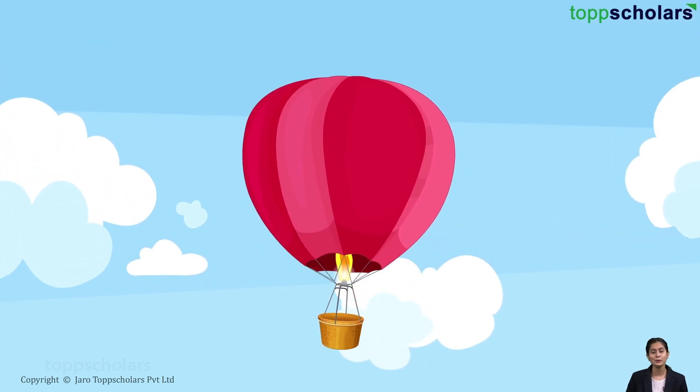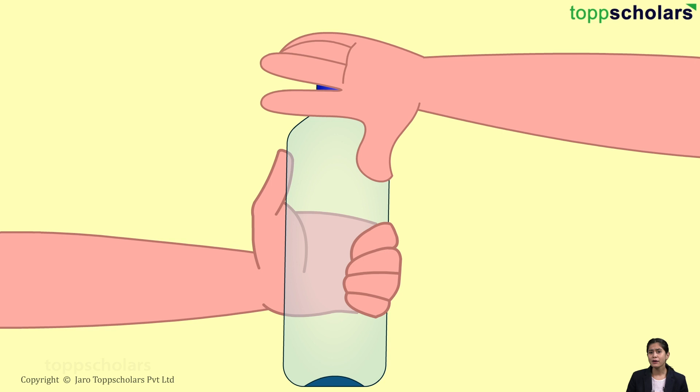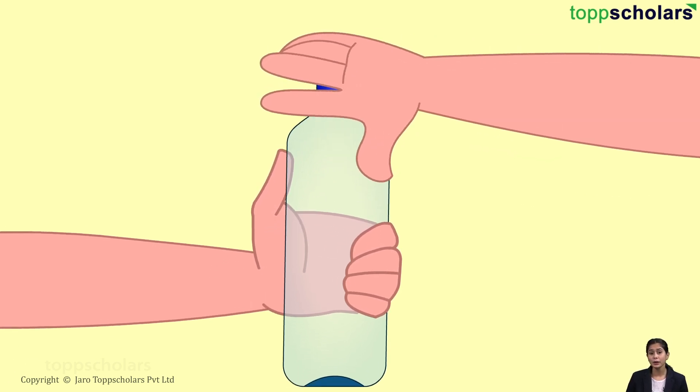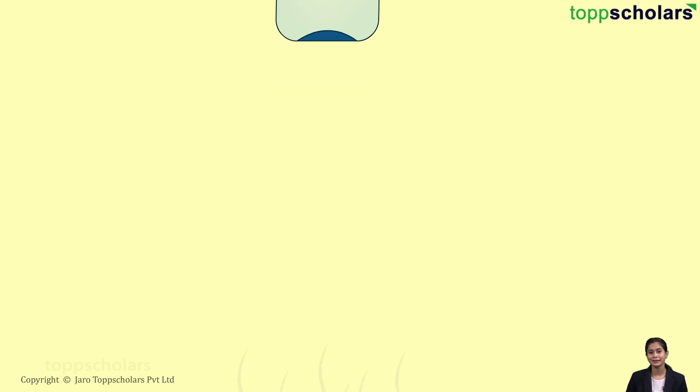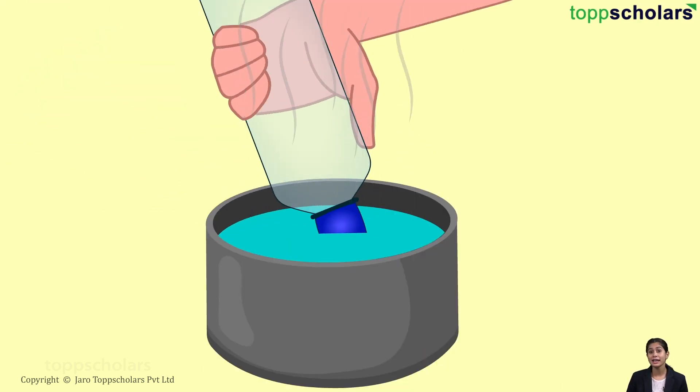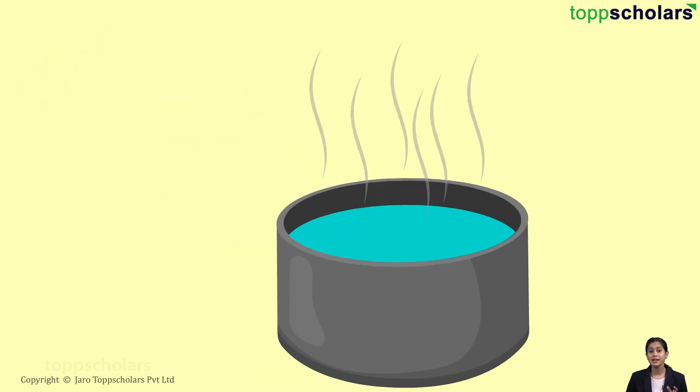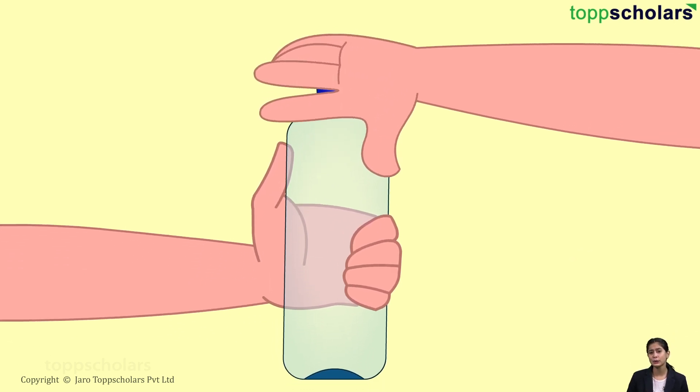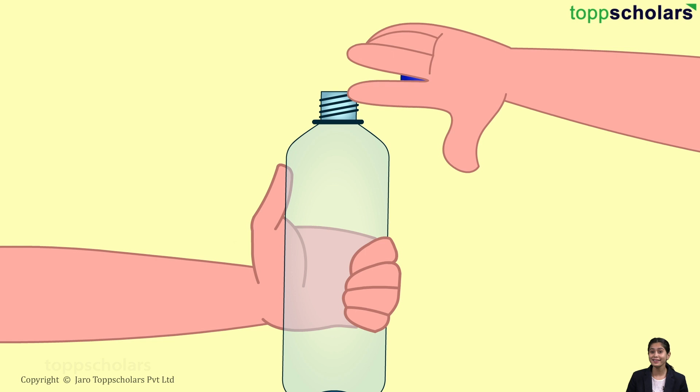Now, let me tell you one interesting use of this property. If ever you find that the lid on a bottle is too tight and can't be opened, just do one thing. Immerse the mouth of the bottle in hot water. The lid undergoes thermal expansion and becomes slightly loose and then opens easily.